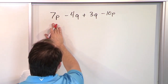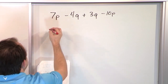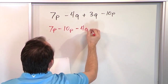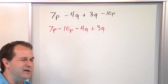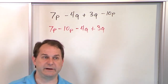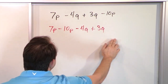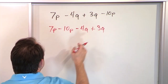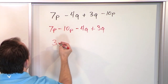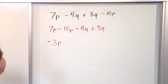We can rewrite it as 7P minus 10P, then minus 4Q, then plus 3Q. When you add things together, 2 plus 3 is the same as 3 plus 2 — the order doesn't matter with addition. So even though you're supposed to go left to right, you can rearrange. Now going left to right: 7P minus 10P gives negative 3P, because 10 minus 7 is 3 and the sign goes with the larger absolute value, which is negative.